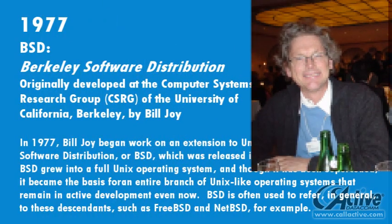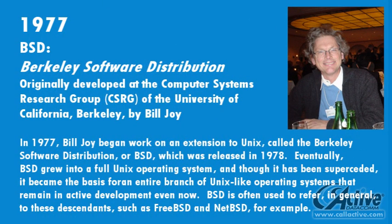In 1977, at the CSRG at UC Berkeley, Bill Joy began work on an extension to Unix called the Berkeley Software Distribution, or BSD, which was released in 1978. Eventually, BSD grew into a full Unix operating system, and became the basis for an entire branch of Unix-like operating systems that remain in active development today. BSD is often used to refer, in general, to these descendants, such as FreeBSD and NetBSD.